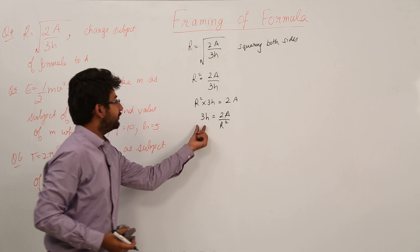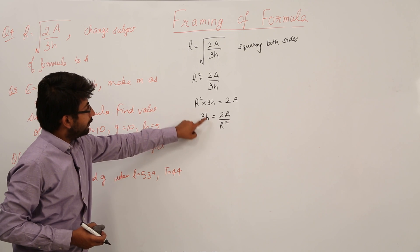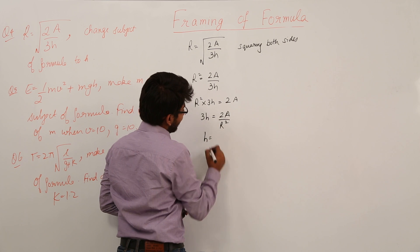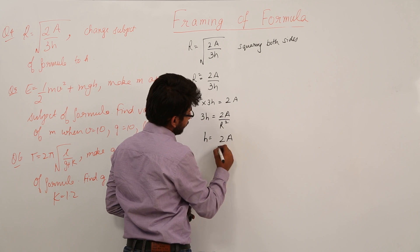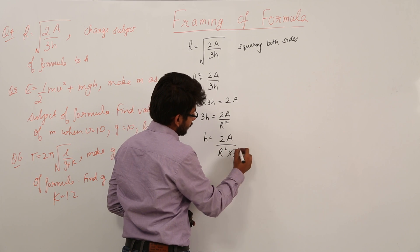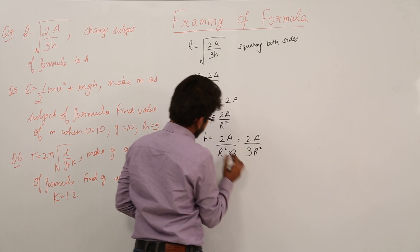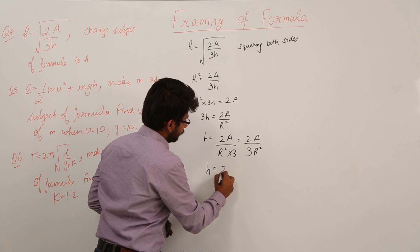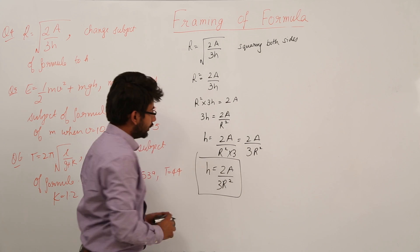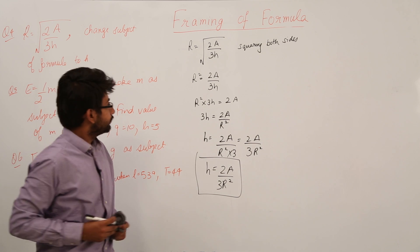We have 3h equals 2a divided by r squared. We also need to take the 3 to the other side, so it becomes h is equal to 2a divided by r squared, and 3 goes to the denominator. So the final formula is h equals 2a divided by 3r squared.